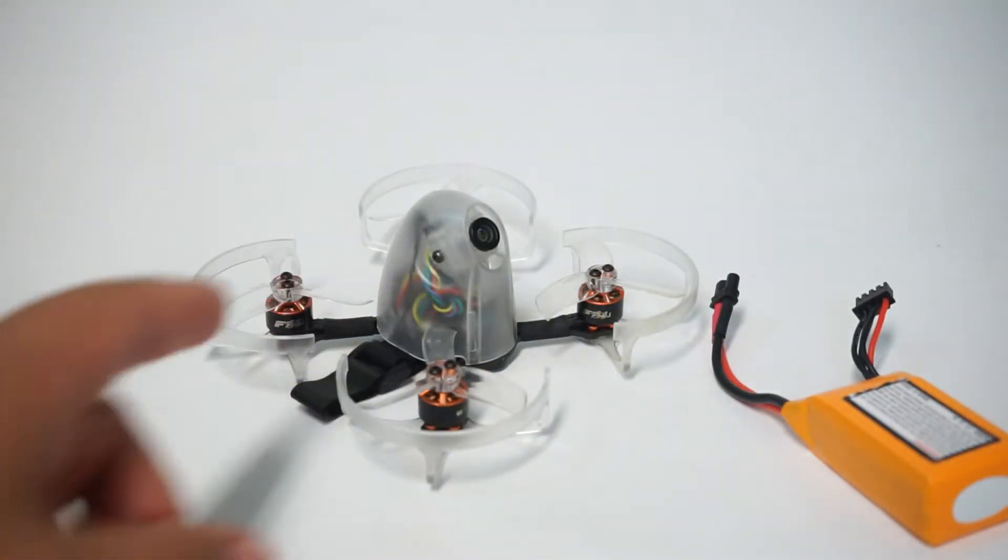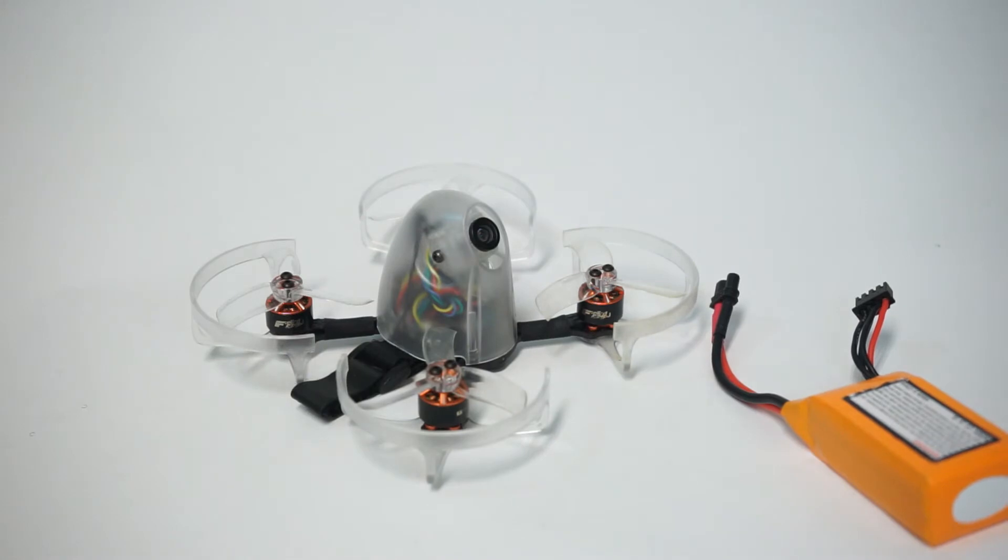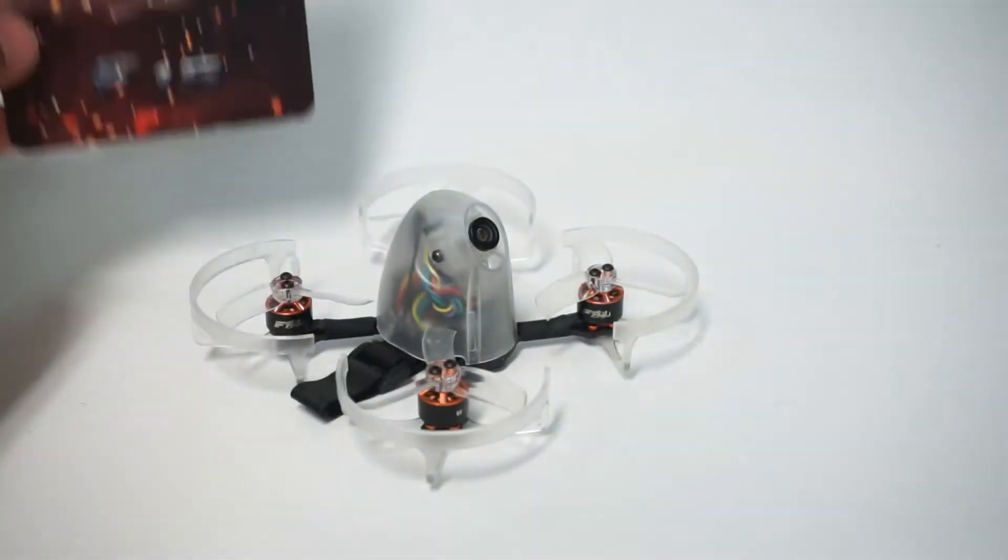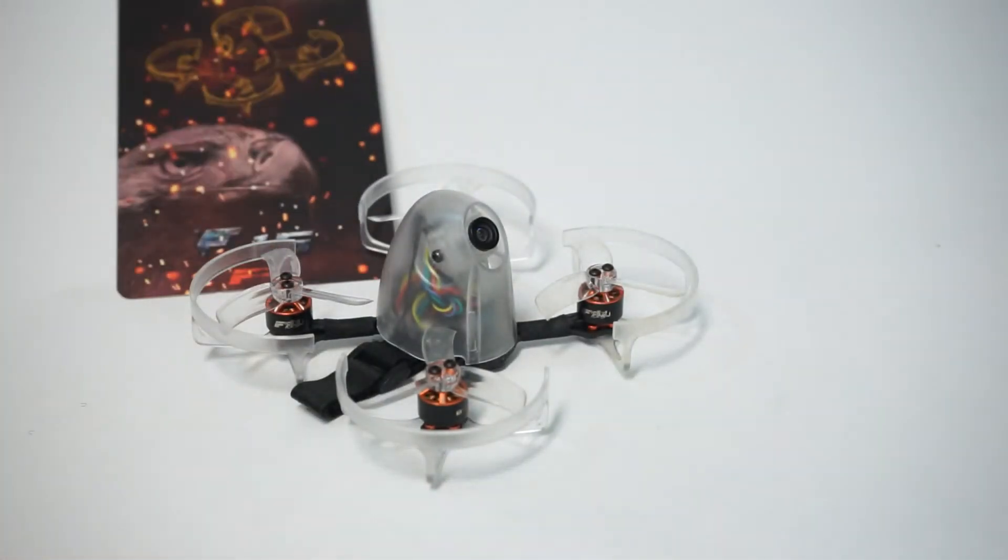but you can actually go into Betaflight and change the color of this LED. I think or there may be a physical switch on there. You can change that color which is really cool. So if you had a bunch of friends that all had these you could do races where it would be very easy to see who's flying where and I think that's kind of the main goal of this.